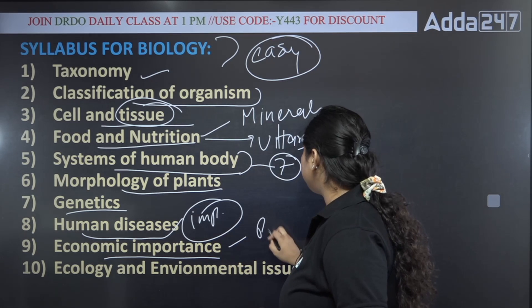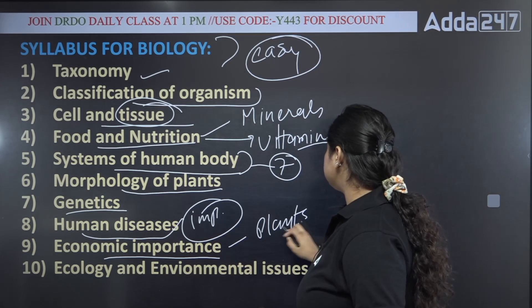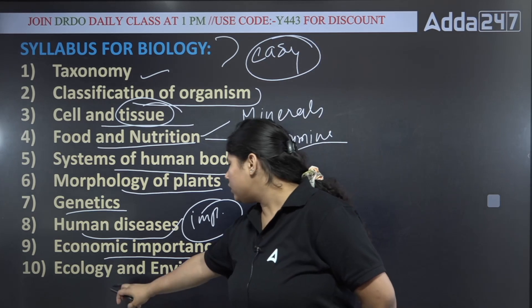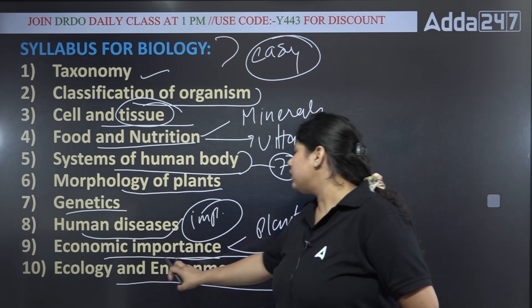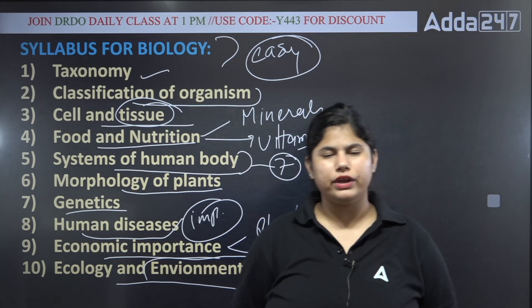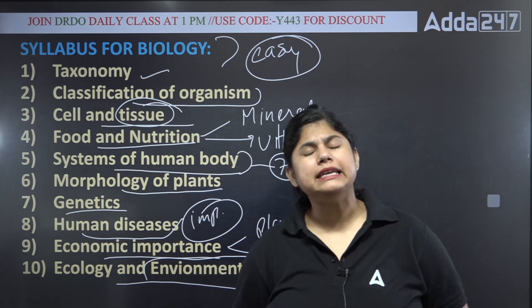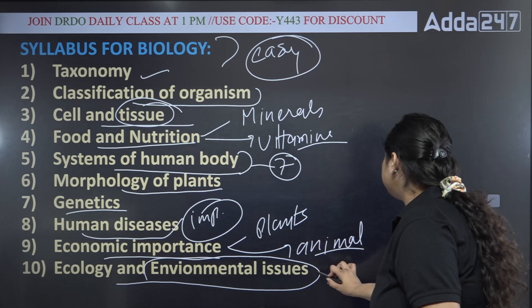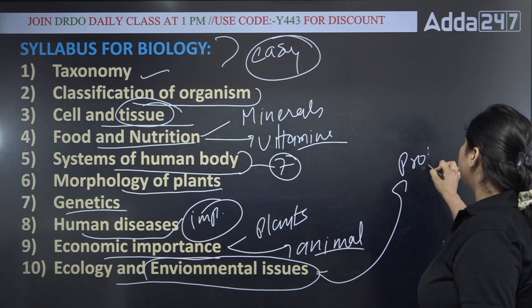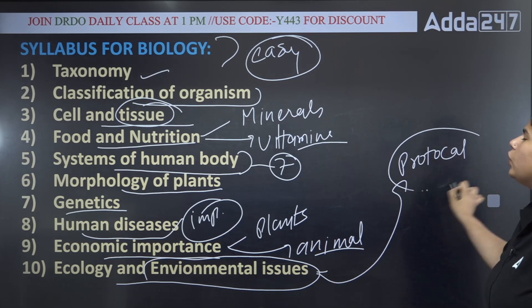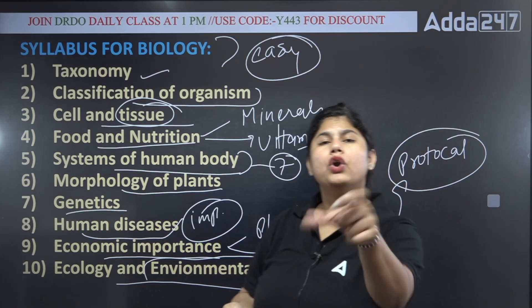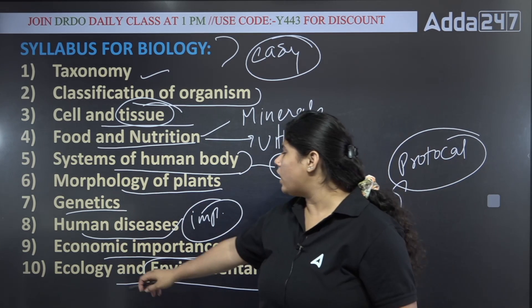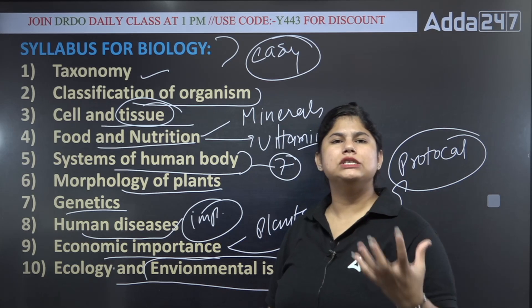Economic importance—your plants and animals, both economic importance. Ecology and environmental issues—environmental issues like acid rain, global warming, these many things. Main protocols: you will learn the main protocols for global warming, Montreal Protocol. In ecology, many things you will learn here.